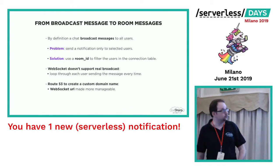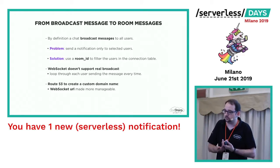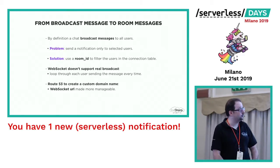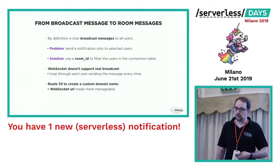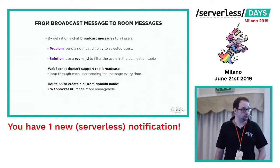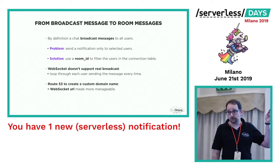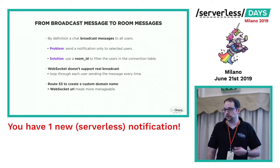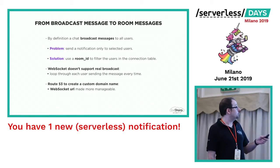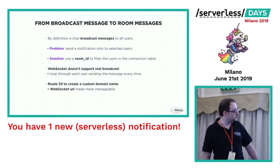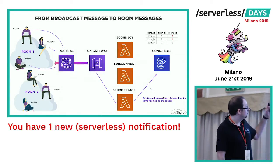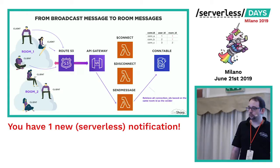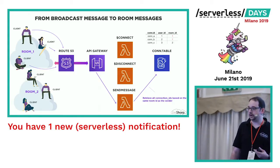A chat sends a message to all users, but we want to do something a little better. As I said, we want to group this information by room ID. What we want to do is just add a room ID column inside the connection table. We don't support direct broadcasting, so we have to loop through each client. We also add Route 53 in this case, because with Route 53 we can create a custom domain name for the URL that API Gateway gives you when you create a new API.